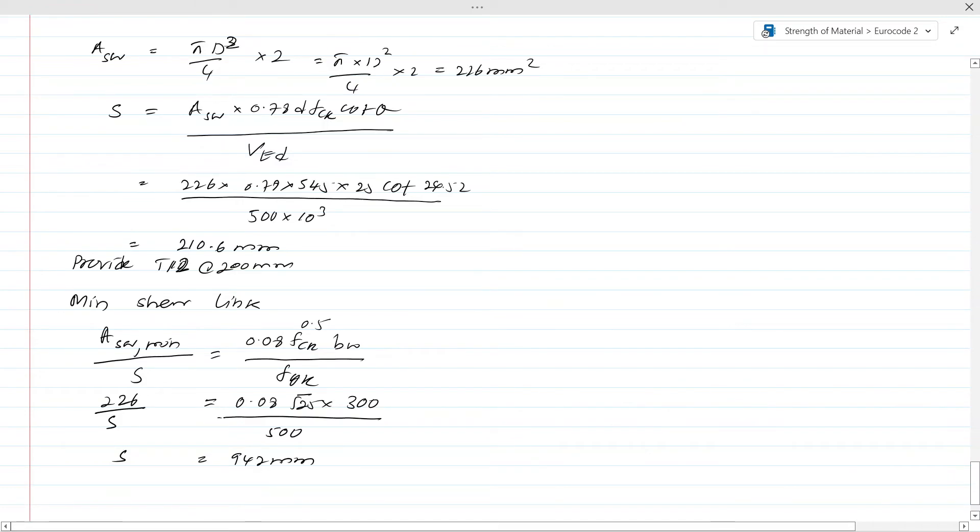In addition to that, since we consider the additional longitudinal tension force developed from this equation or method, that is ΔF_td equals 0.5 × VEd × cot θ. The derivations of these equations and all that we can refer to the basic guidelines. Here we are concentrating on the method of calculating the shear reinforcement. This tensile force will be considered in the rebar curtailments and anchorage. You have to consider this force for rebar curtailment and anchorage.